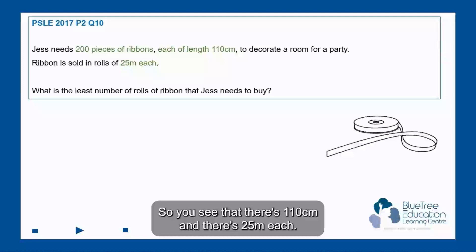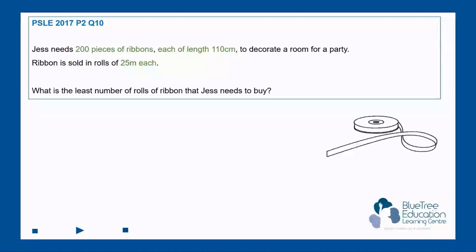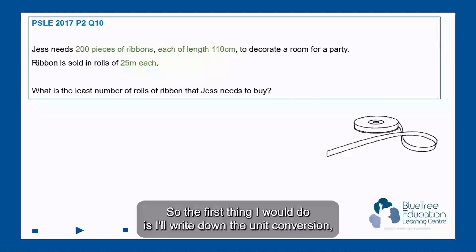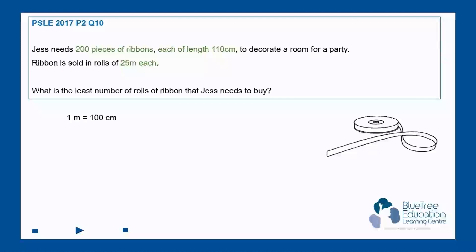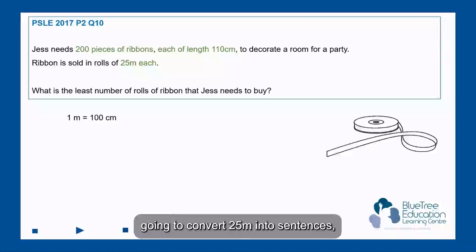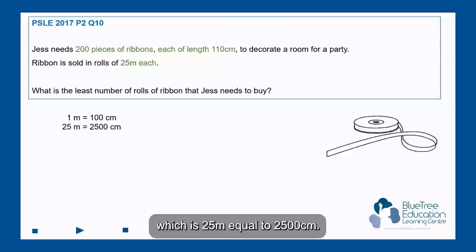You can see that there's 110 cm and 25 meters each. So the first thing I would do is write down the unit conversion, which is 1 meter is equal to 100 cm. Knowing this, I'm going to convert 25 meters into centimeters, which is 25 meters equal to 2500 cm.